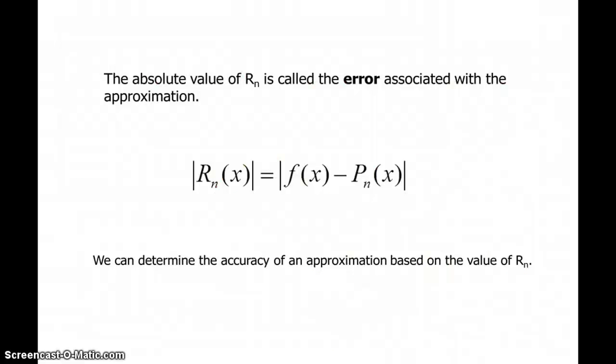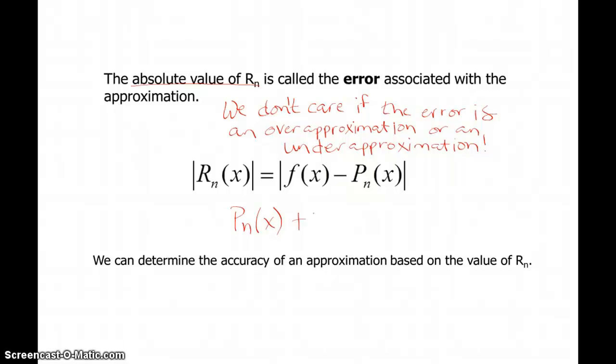The absolute value of the Lagrange error bound is called the error associated with the approximation. We want to use the absolute value because we don't care if the error is an over approximation. By finding the absolute value, we don't have to worry about whether p_n(x) plus R_n(x) equals f(x) versus p_n(x) minus R_n(x) equals f(x).